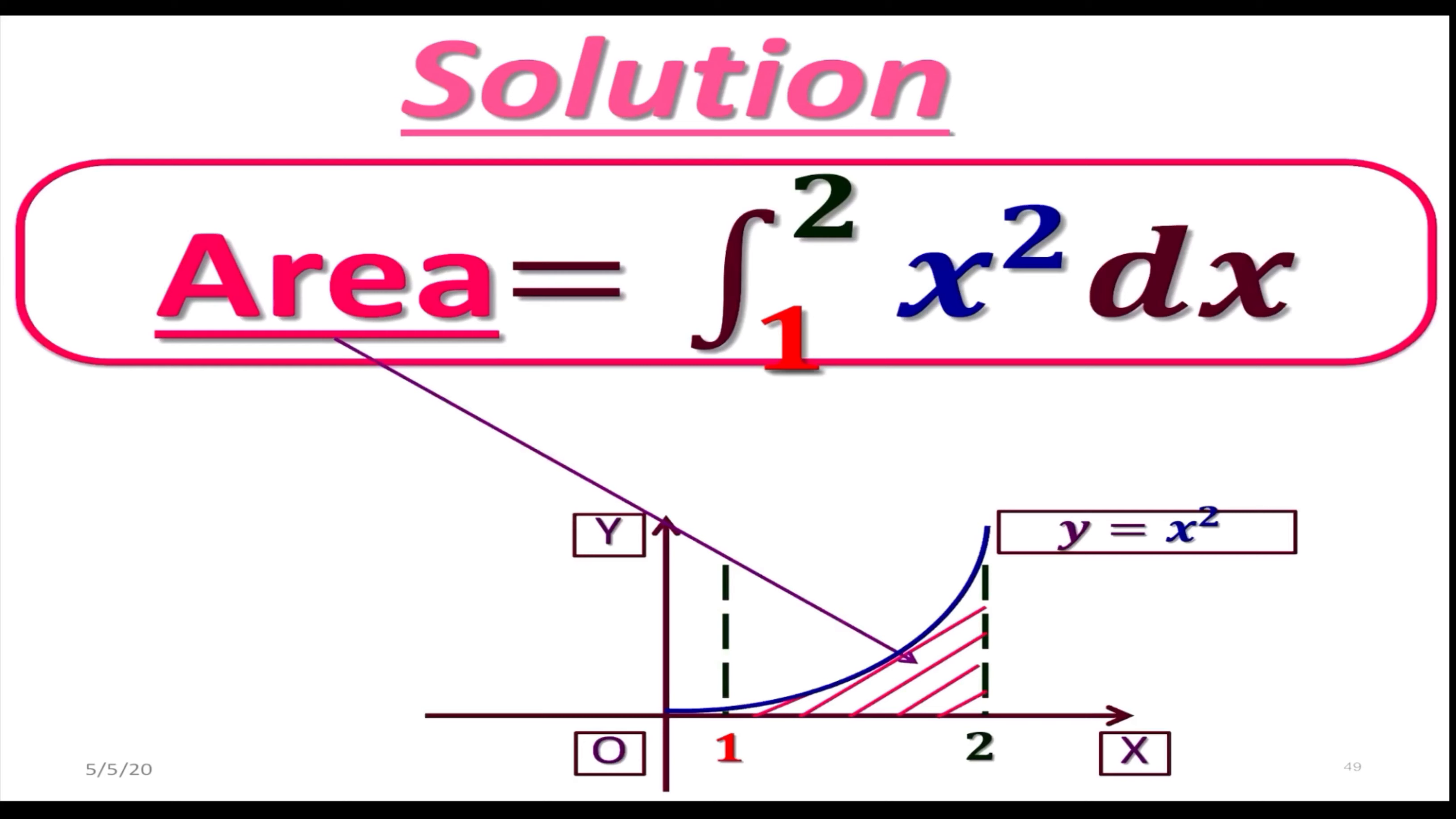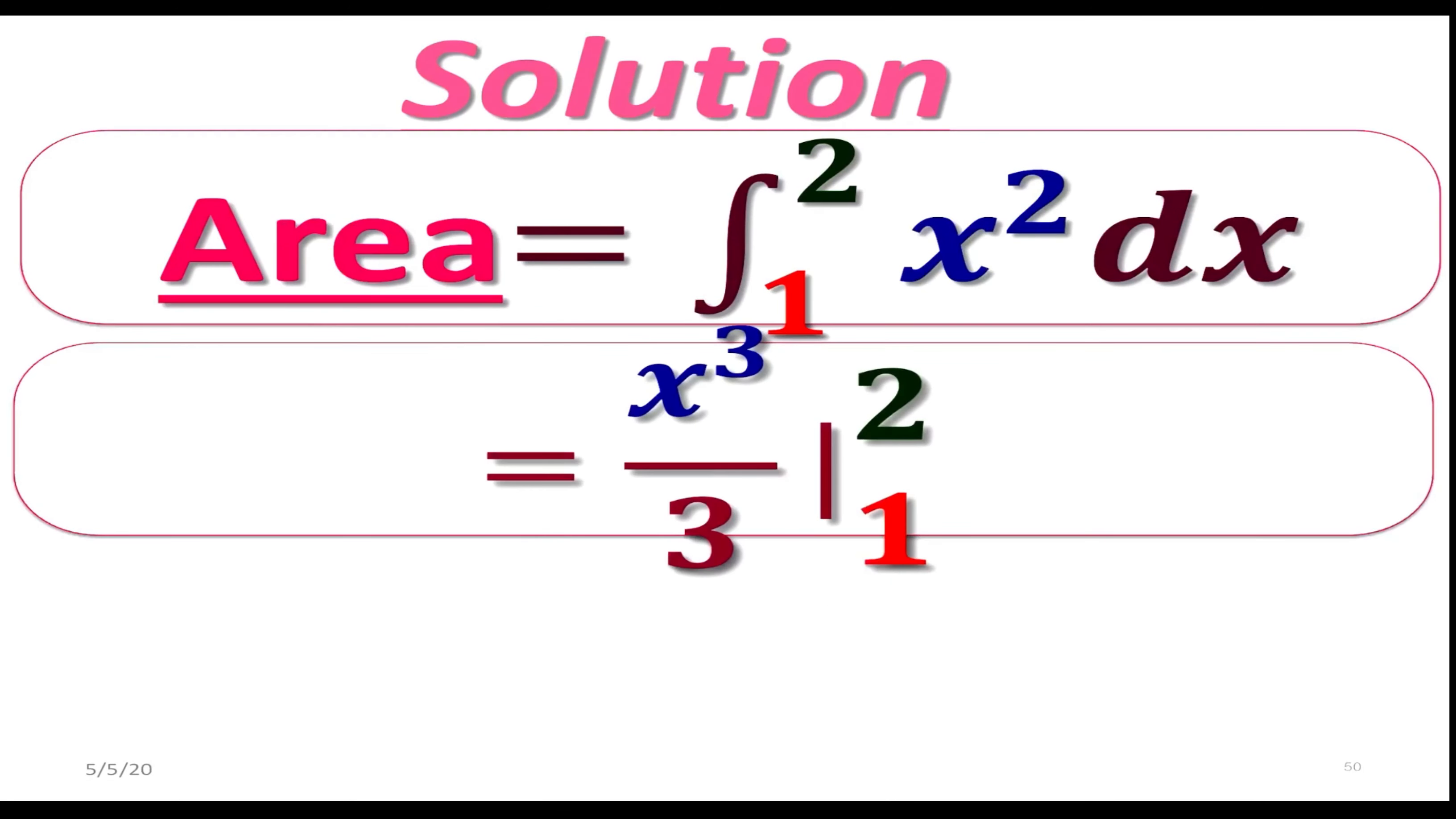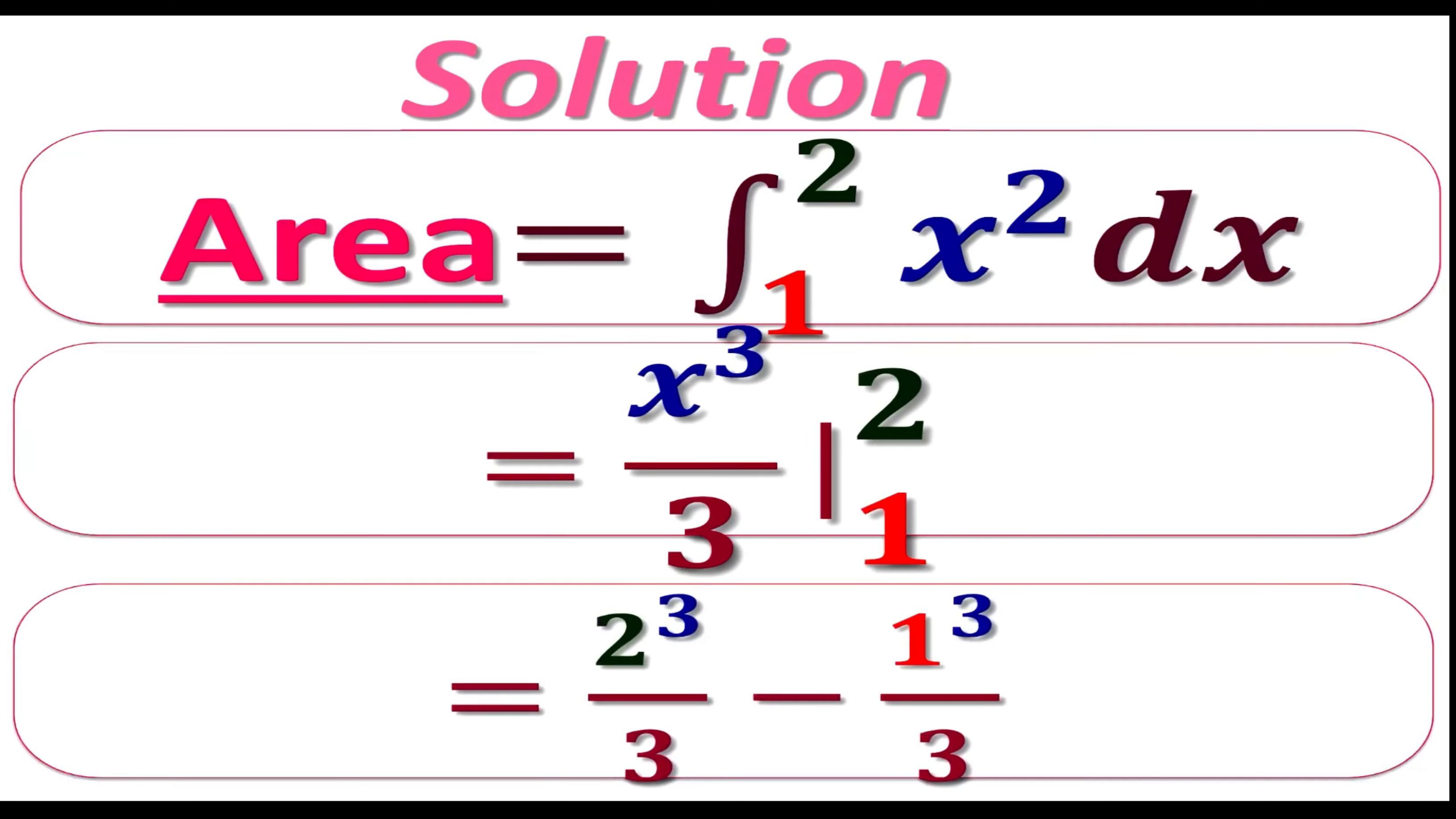That shaded area under this branch, limited with these two straight lines, x equals 1 and x equals 2, is the area we are looking for. Let's just find this integral. The indefinite integral of x squared is going to be x cubed over 3, and we are going to evaluate this with these two limits, 1 and 2.